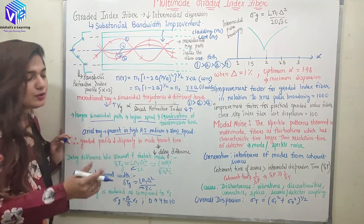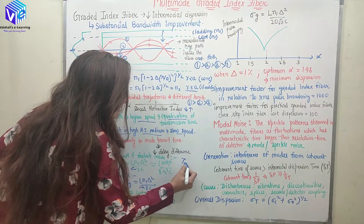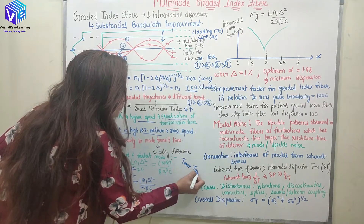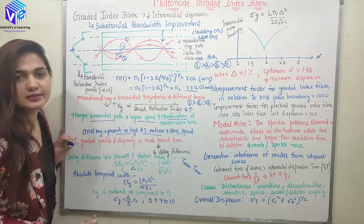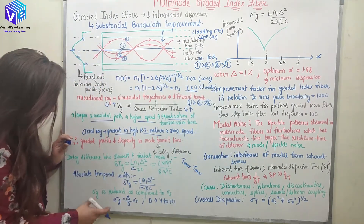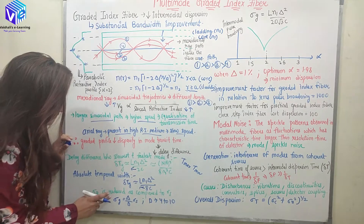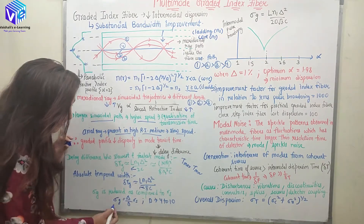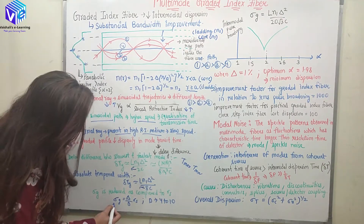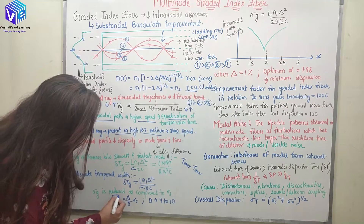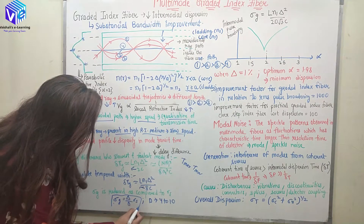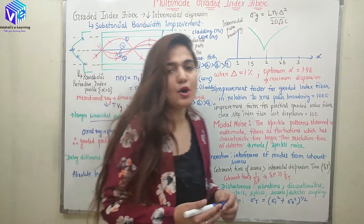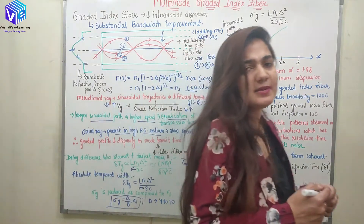When there is no delay difference between T_max and T_min, dispersion is reduced. Sigma_G is reduced compared to sigma_S. Sigma_G can be given as (delta / D) · sigma_S, where D depends on various parameters.